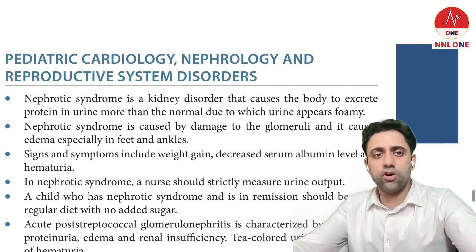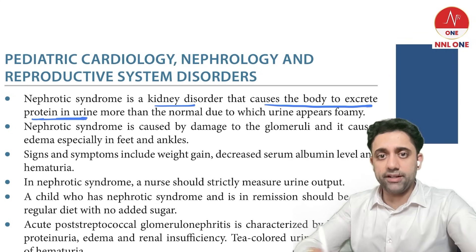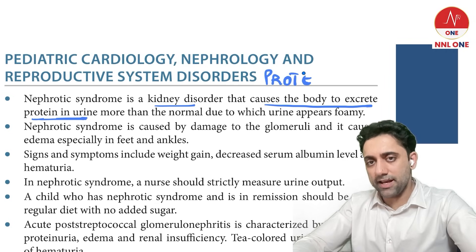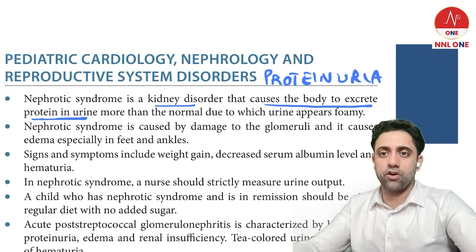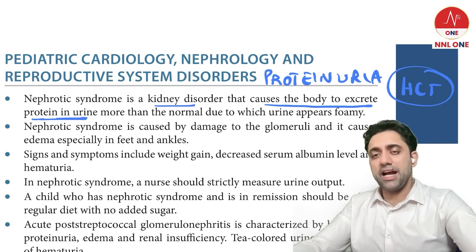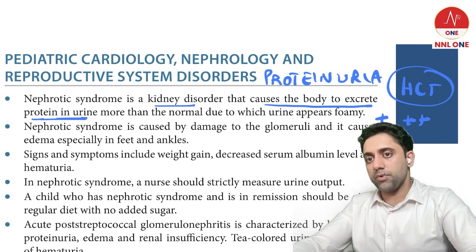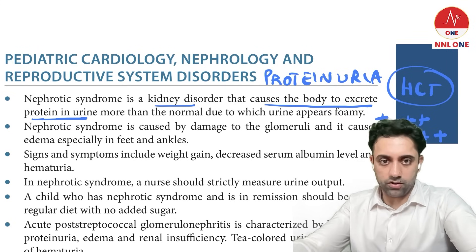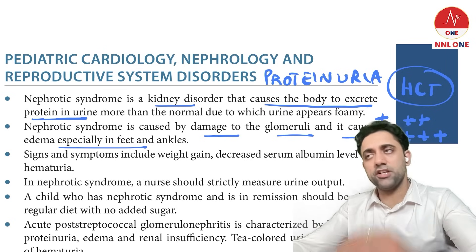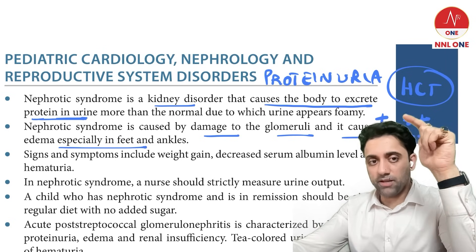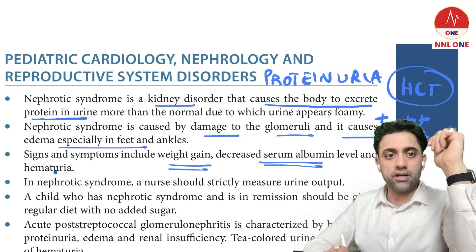Nephrotic syndrome is a kidney problem that causes the body to excrete proteins in the urine — massive proteinuria. You can diagnose it using a heat coagulation test: take the patient's urine, heat it, and a color change of 1+ to 4+ indicates proteinuria. It is caused by damage to the glomeruli and causes edema of the feet and ankles.